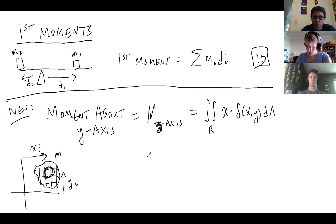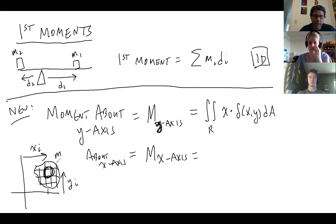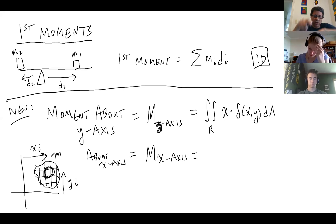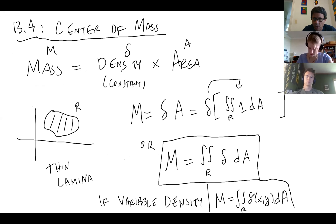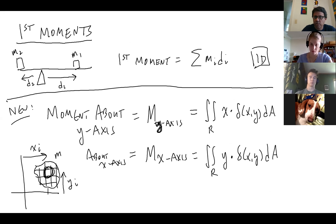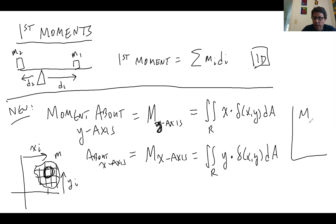Similarly, the moment about the x-axis, Mₓ, is caused by how far you are from the x-axis — governed by the y-coordinate. So Mₓ = double integral of y·δ dA. For reference, the mass M is just the double integral of δ dA — no x or y multiplier.